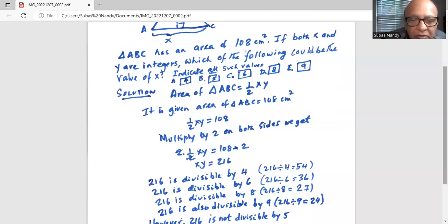Again, if x is 6, then y is 36, because 216 divided by 6 is 36.